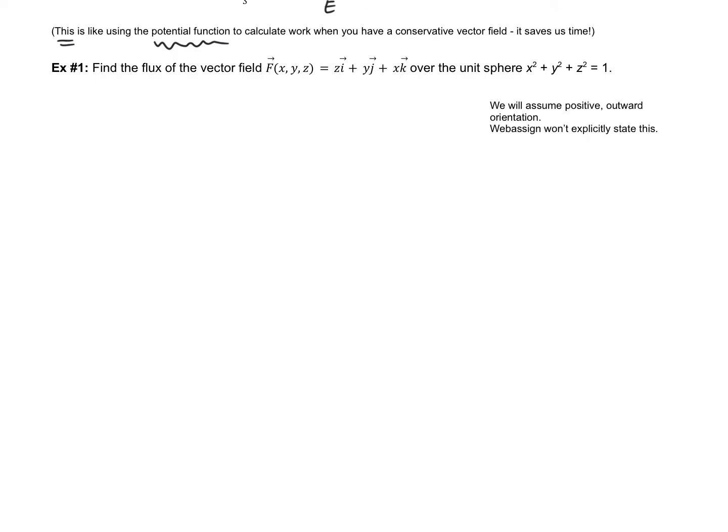Find the flux of the vector field f over the unit sphere, x squared add y squared add z squared equals 1. So, one thing that I'm going to tell you is we are going to assume that there is positive outward orientation. Webassign is not going to explicitly state that. So, that's what we're going to have to assume. So, can we use the divergence theorem? Well, we have this unit sphere, which is certainly closed. The sphere around it is the boundary surface. We're assuming positive outward orientation. So, yes, we can use divergence theorem.